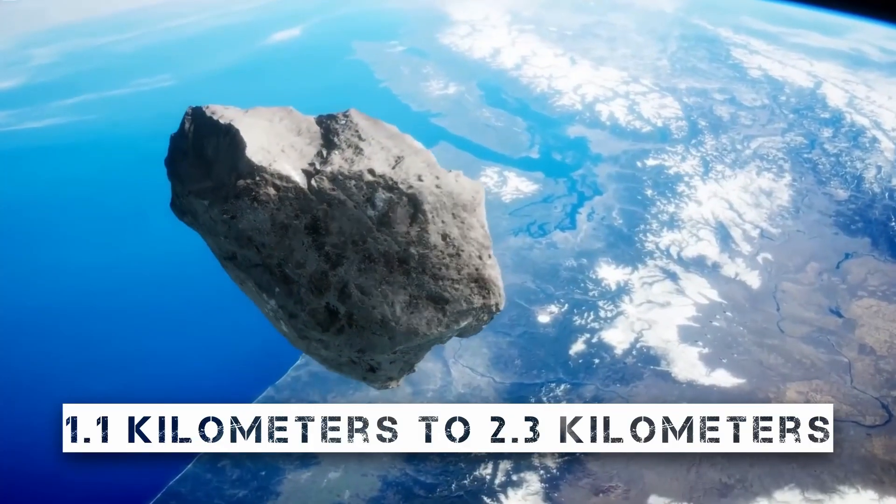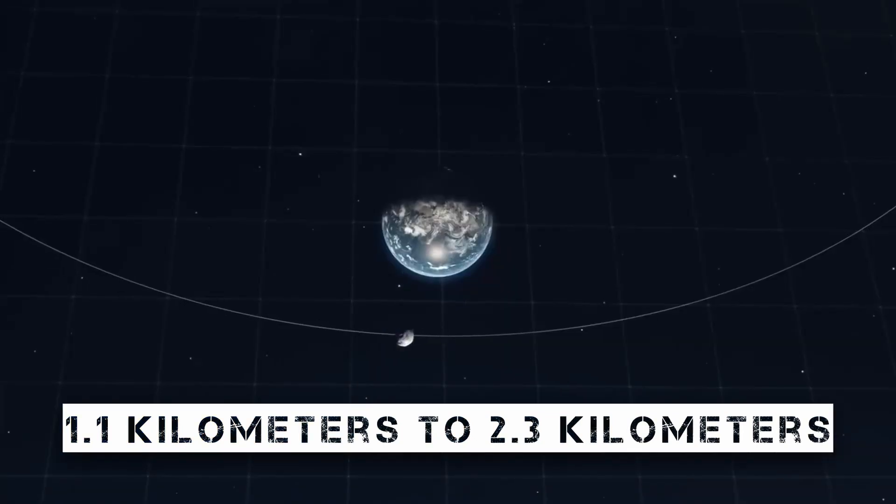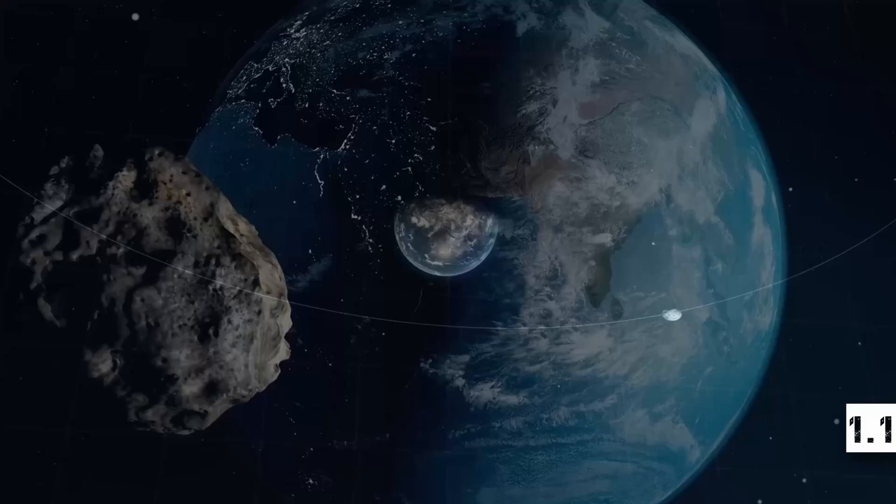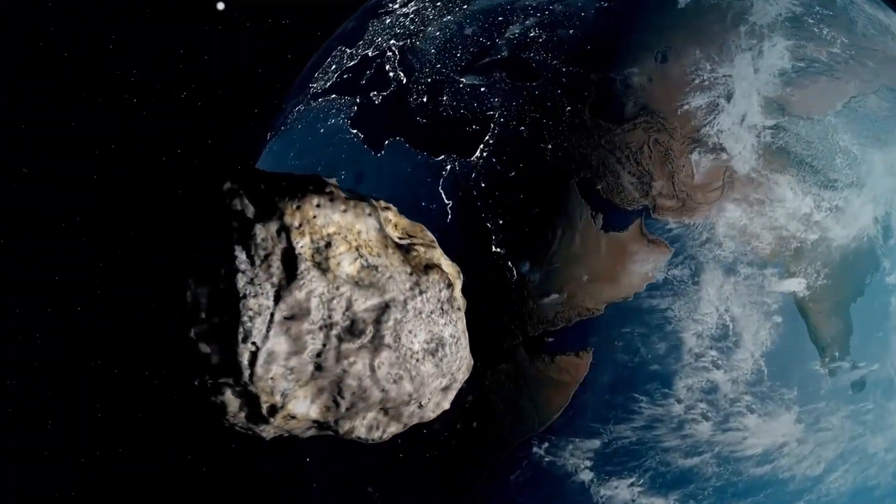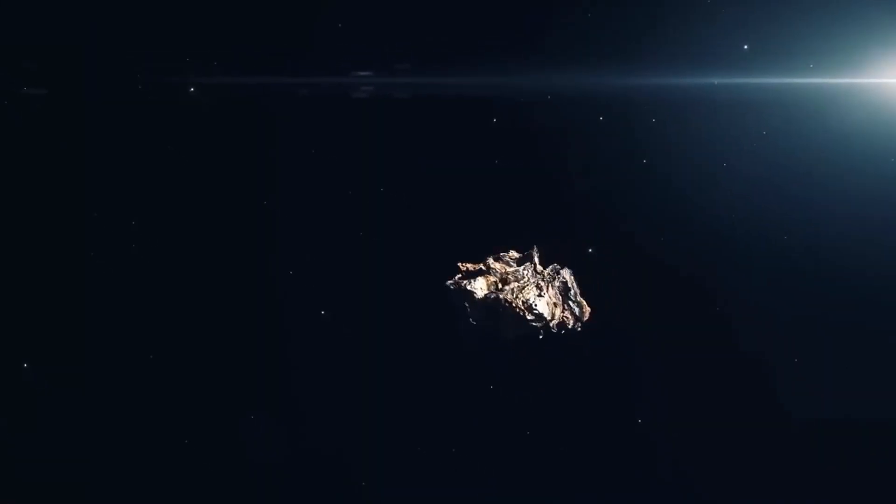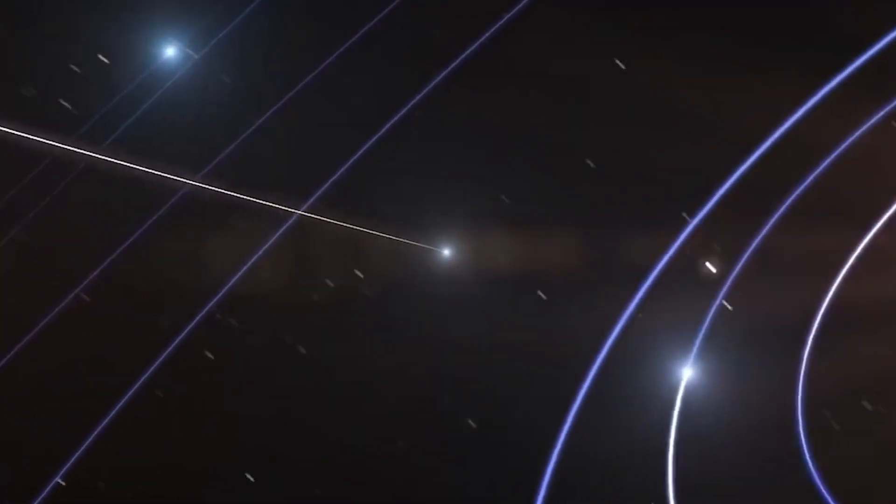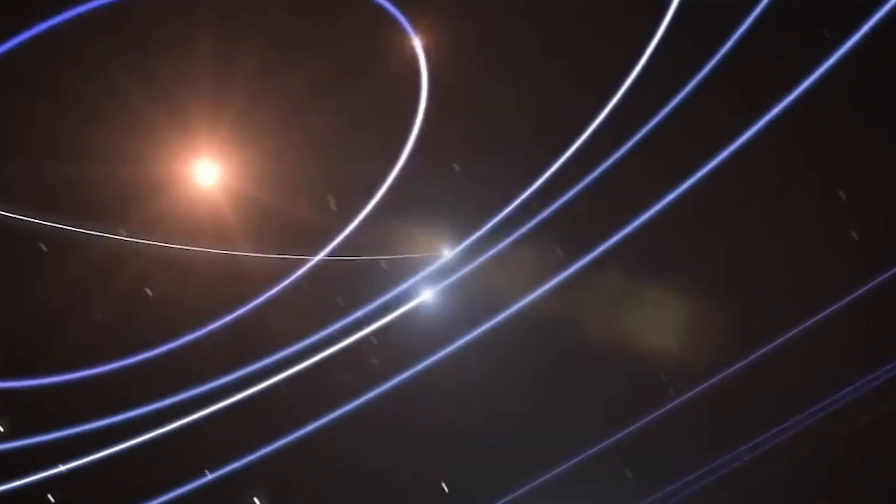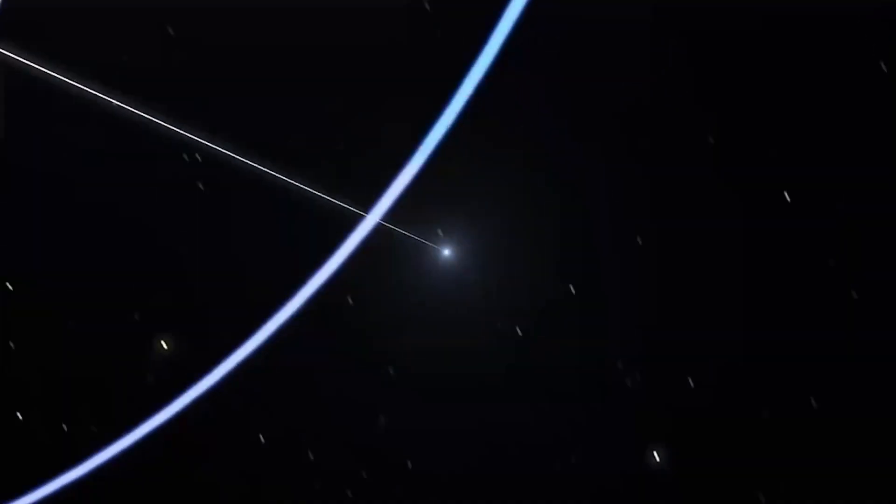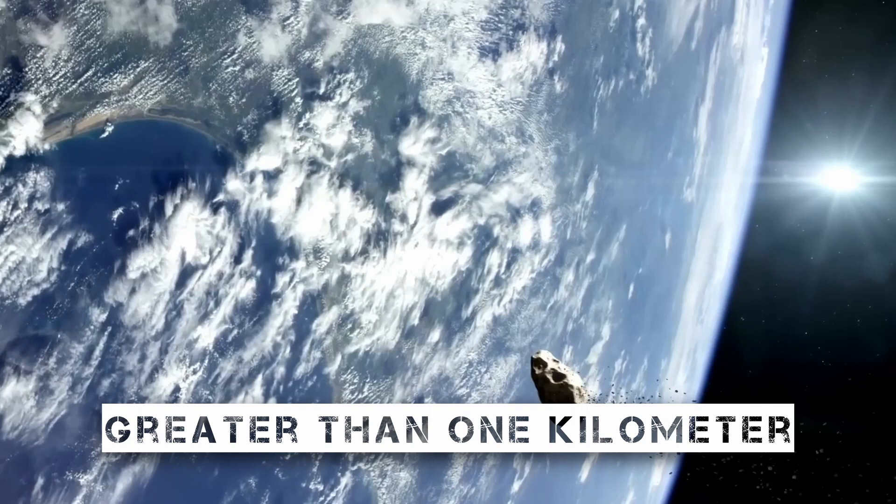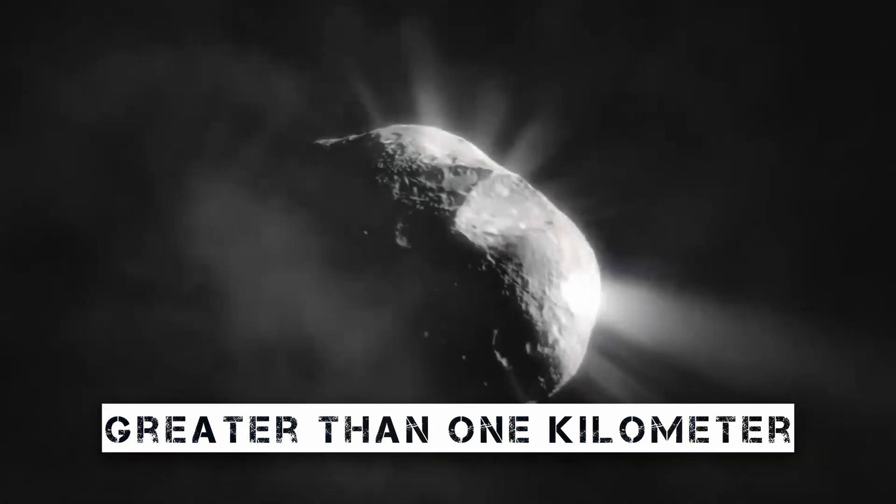With a diameter ranging from 1.1 kilometers to 2.3 kilometers, asteroid 2022 AP7 is the largest potentially hazardous asteroid discovered in the past eight years. For context, a mass extinction event on Earth can be caused by an asteroid with a diameter of more than one kilometer. An asteroid must cross Earth's orbit in addition to having a diameter greater than one kilometer in order to be classified as potentially hazardous.